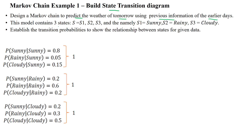This model contains three states: S1, S2, and S3, which are named as sunny (S1), rainy (S2), and cloudy (S3). The transition probabilities have been given to show the relationship between the different states.